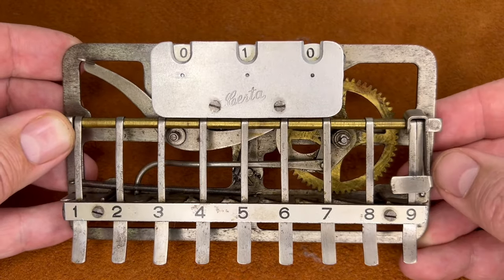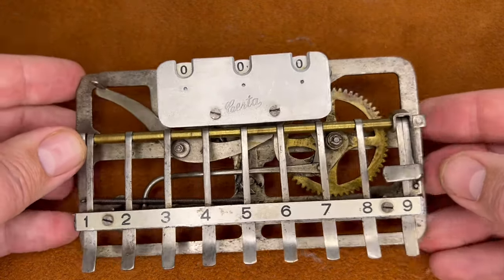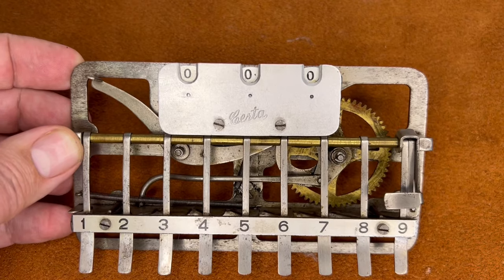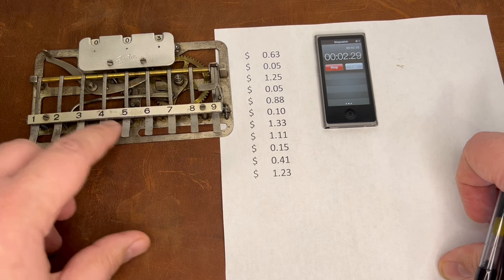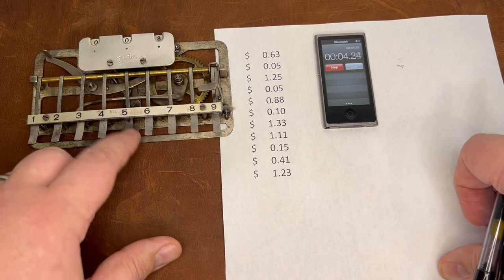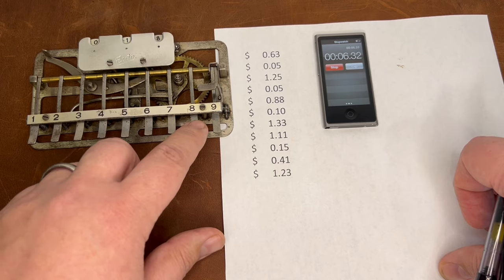So this device was a column adder, in that when you add a whole bunch of numbers, you would add one column at a time, and then move on to the next one. Of course, I wanted to see how well it would do, so I had to time myself.